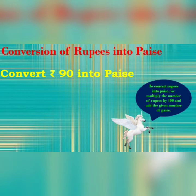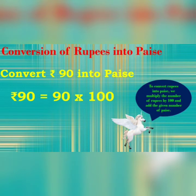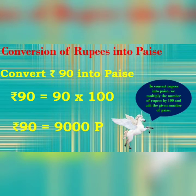Our first question is: Convert Rupees 90 into Paise. In our question, we don't have Paise. We have to change Rupees 90 into Paise. So we will multiply 90 by 100. Therefore, Rupees 90 is equal to 9,000 Paise.